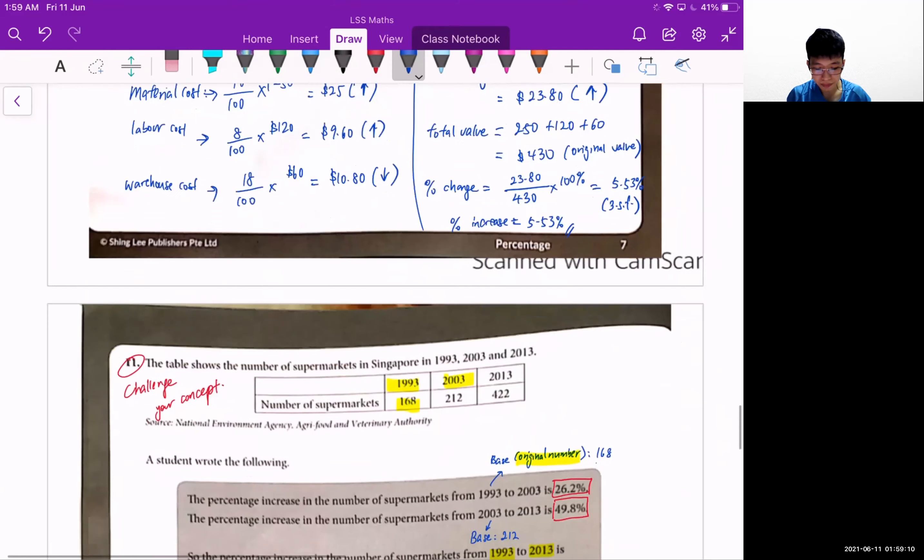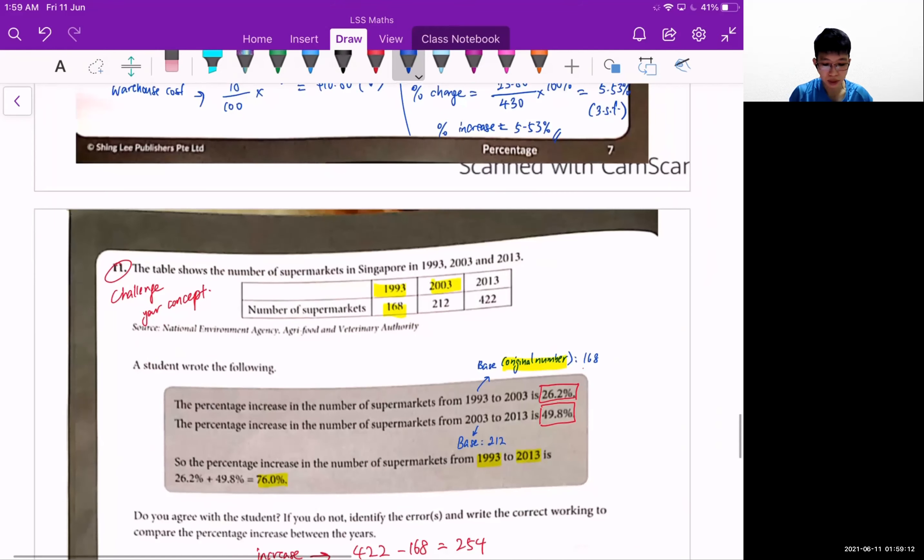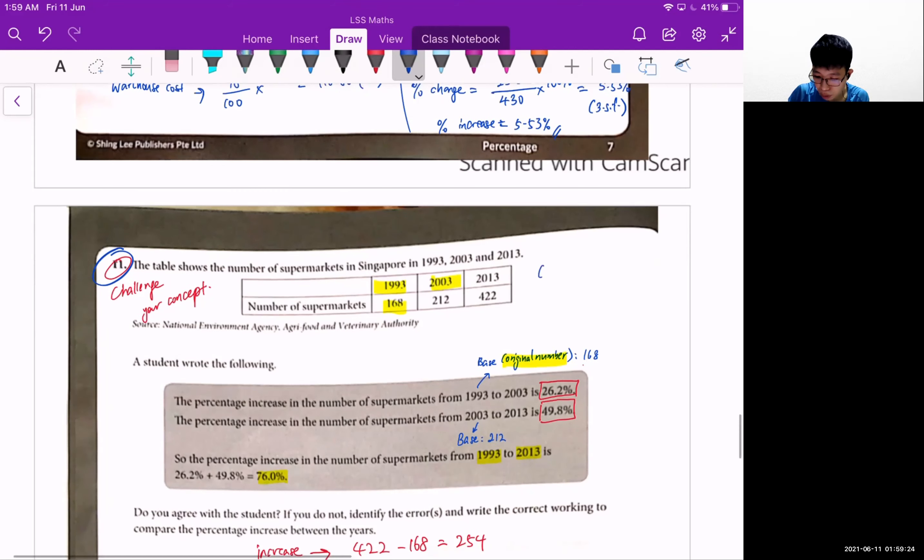Once you have figured out question 10, this shall give you some idea how to challenge yourself for question 11. Question 11 basically helps you rectify any misconception that you have, which is a common mistake that most students make. If you can identify this common mistake in question 11, that means you are good to go for percentage change. Thank you.